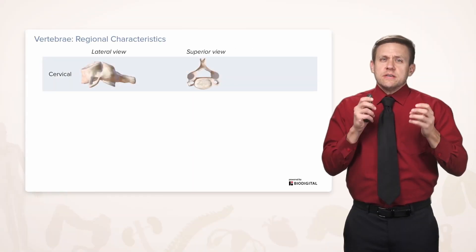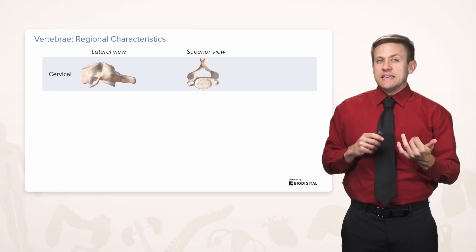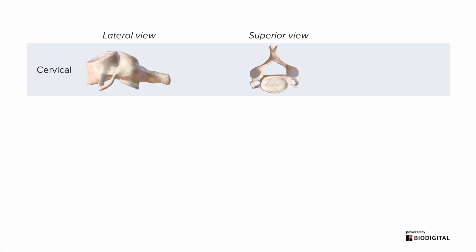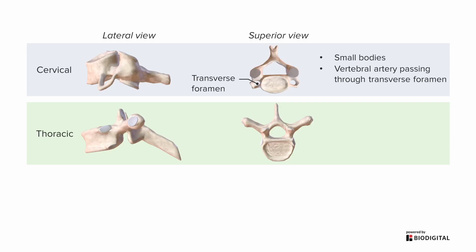There are some minor changes along the length of the vertebral column. Cervical vertebrae have extra holes called transverse foramina out in the transverse processes, and they have smaller bodies. These foramina allow the vertebral artery to travel through them. In the thorax, thoracic vertebrae have unique features called costal facets — flat plates where the ribs attach.